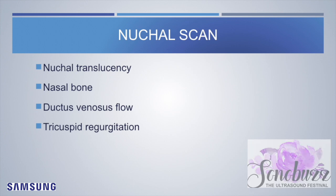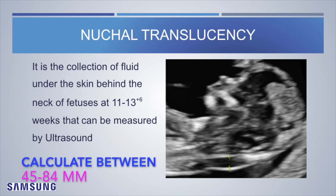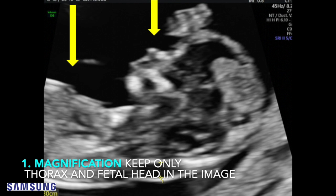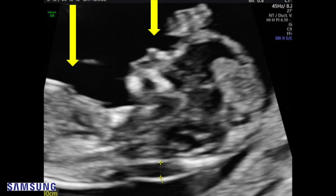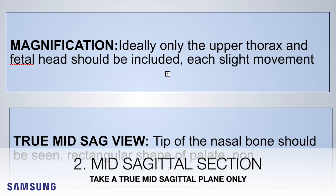The nuchal translucency is a collection of fluid under the skin behind the neck measurable by ultrasound. NT is calculated between a CRL of 45 to 84 millimeters. There are six criteria for image quality. Magnification should be such that only the upper thorax and fetal head are included, and each slight movement of the caliper produces only a 0.1 millimeter change in the measurement.